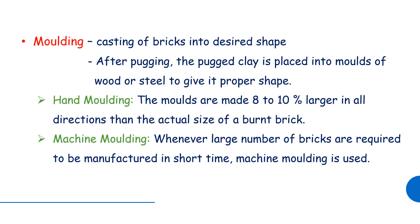Molding is the cutting of bricks into the desired shape. There are two types: hand molding and machine molding. Hand molding is used for small-scale manufacturing, while machine molding is used for larger-scale production. Shrinkage allowance is made in the mold size.